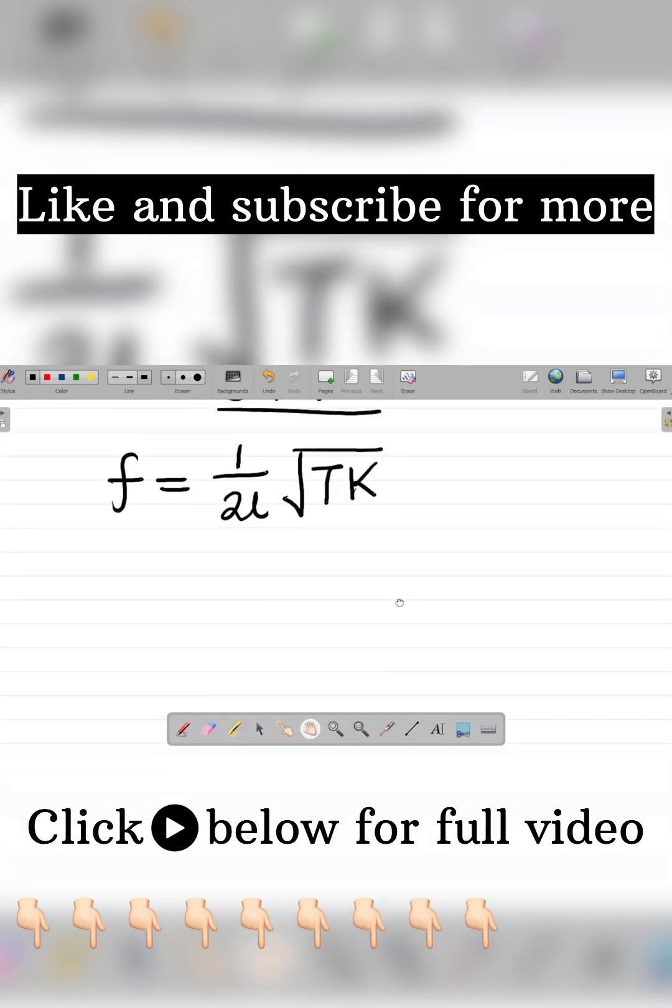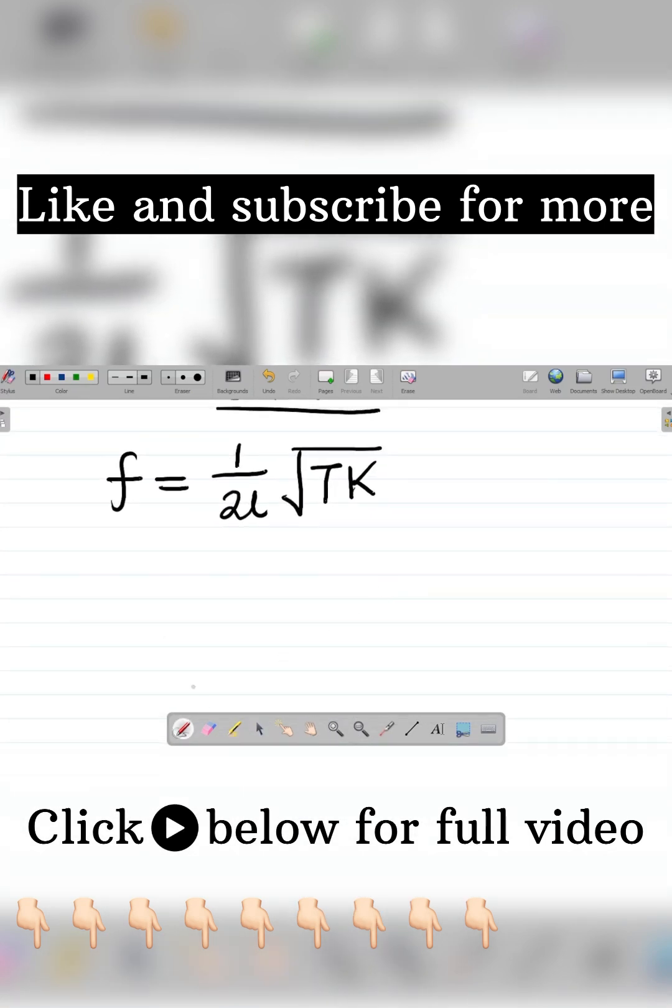Let's get the dimension of each of the parameters. We said f is equal to frequency, and for frequency your dimension is equal to T to the power minus one. T to the power minus one is the dimension for frequency, and that's because...